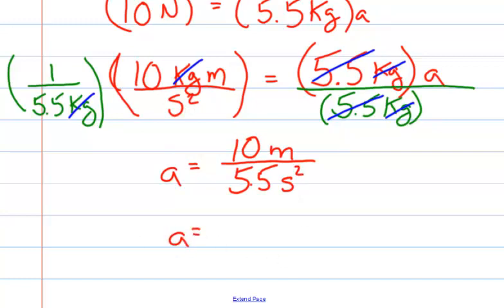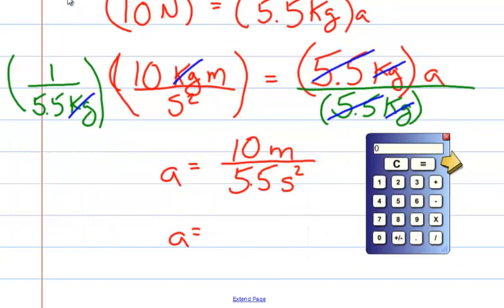Bringing in a calculator to make life easy, 10 divided by 5.5 equals 1.8181. We round to the nearest tenth, so it's 1.8.